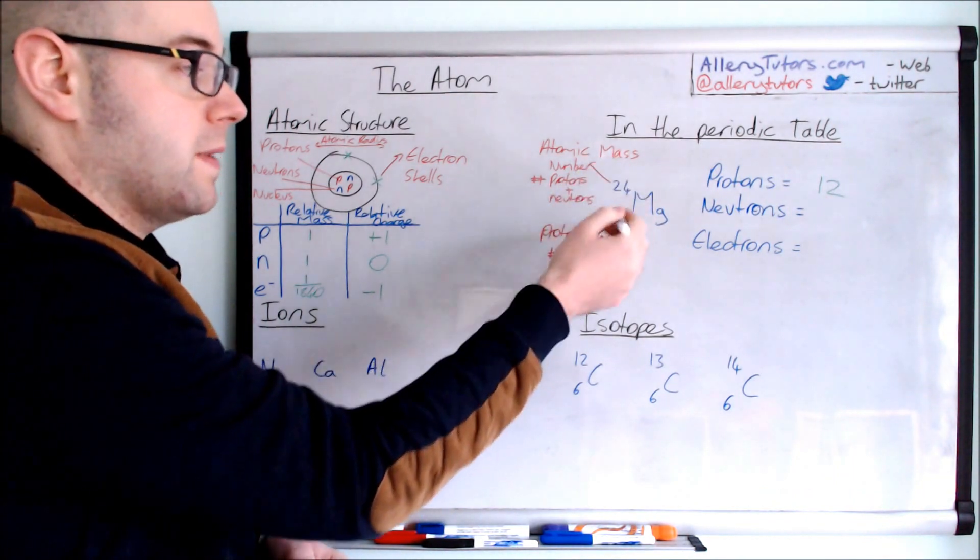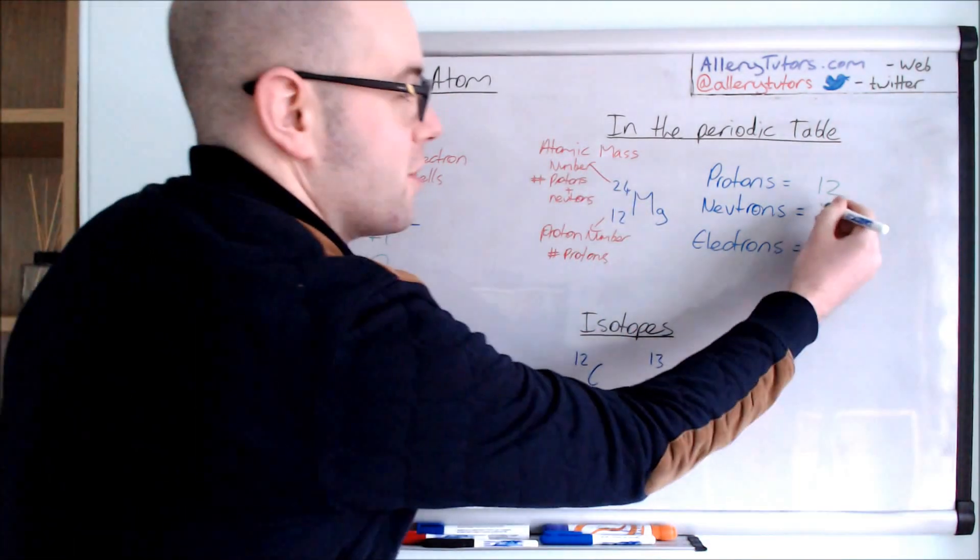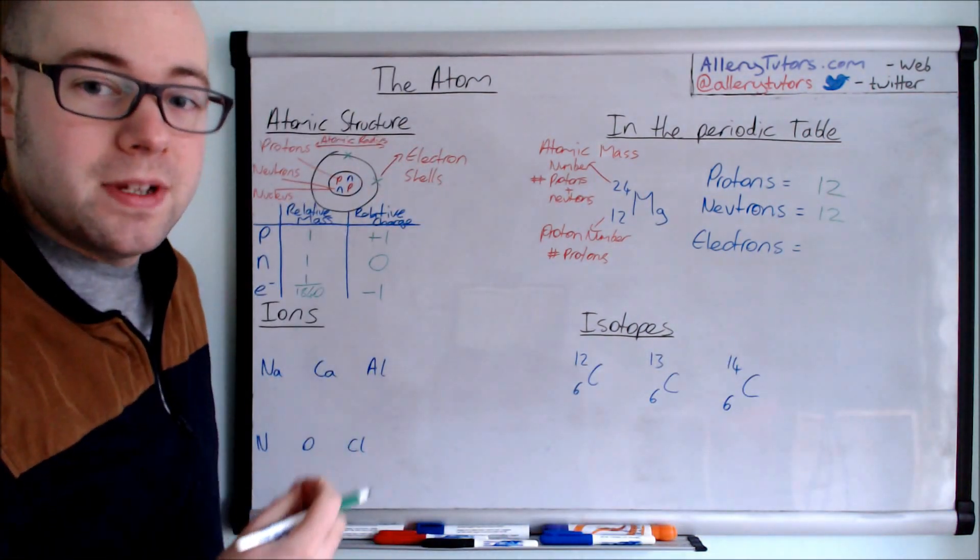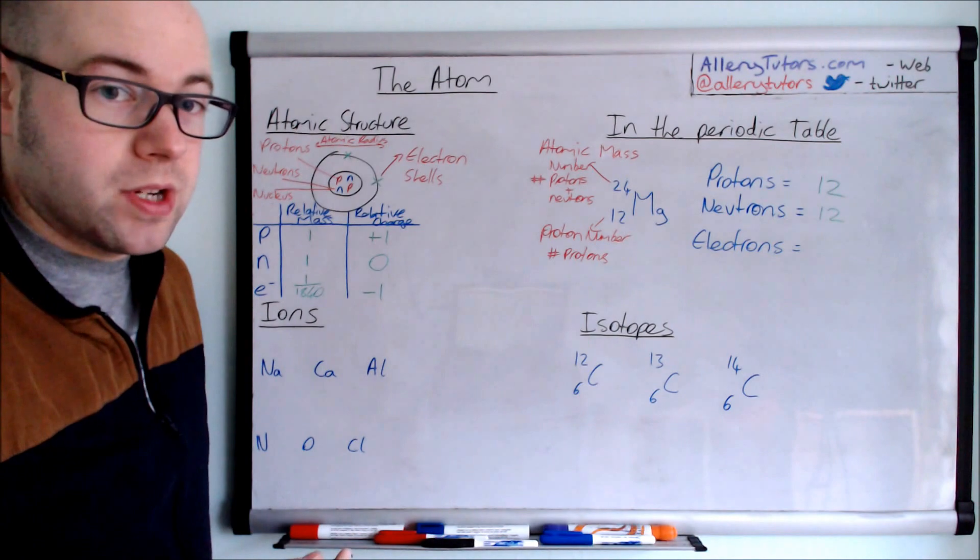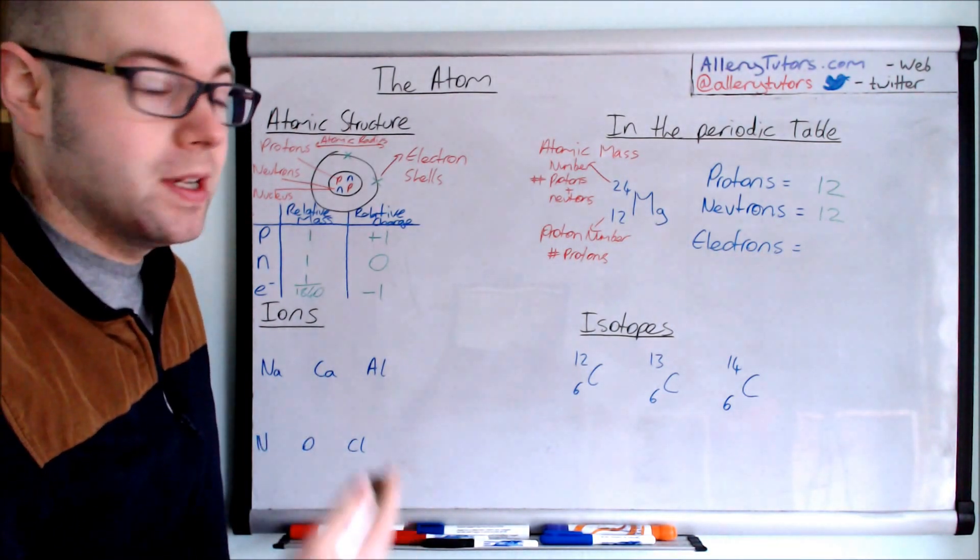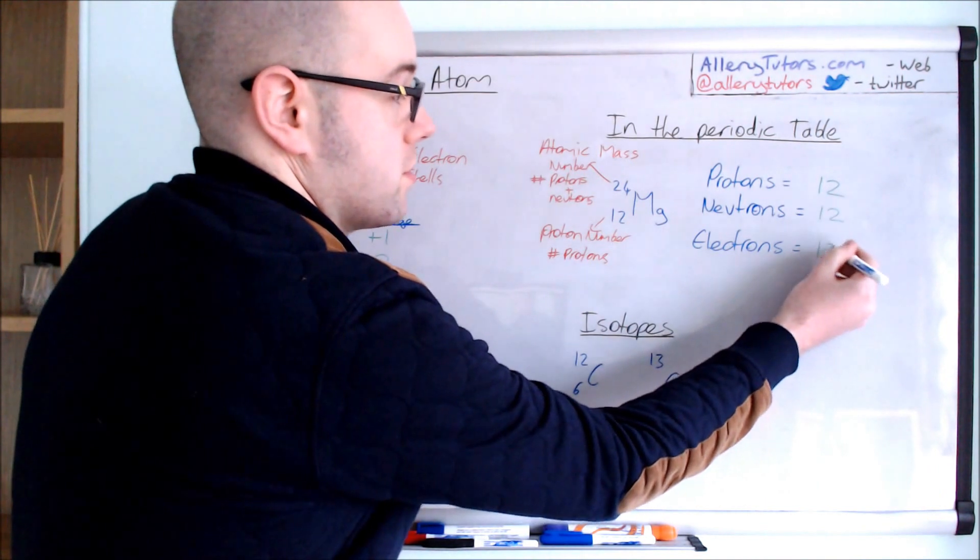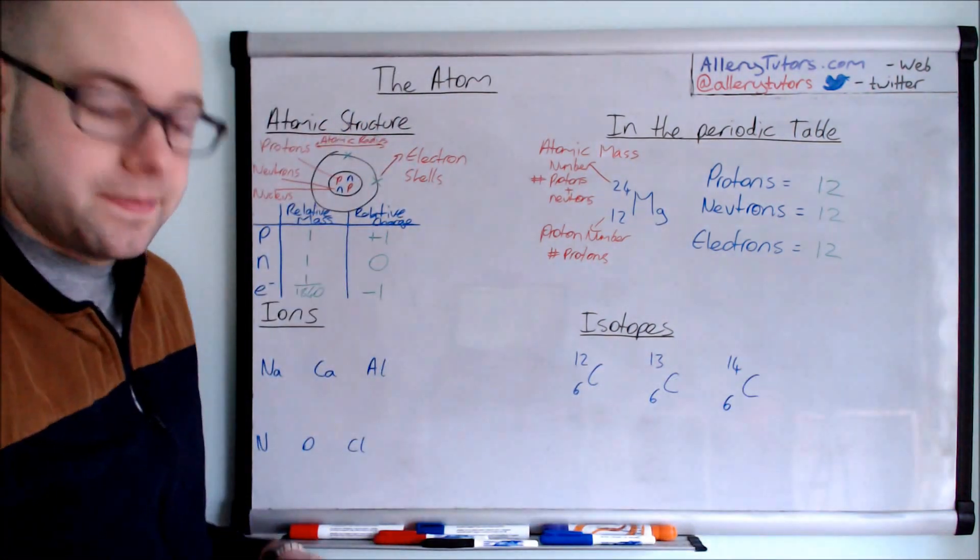And the number of electrons in an atom equals the number of protons. So it's a neutral atom. This is slightly different for ions. But in this case, the number of electrons is just going to be 12 in this case.